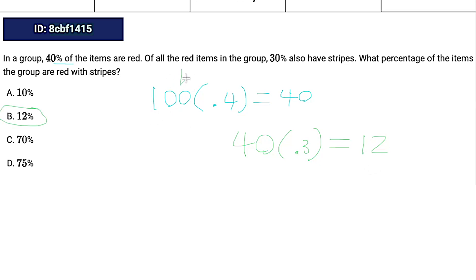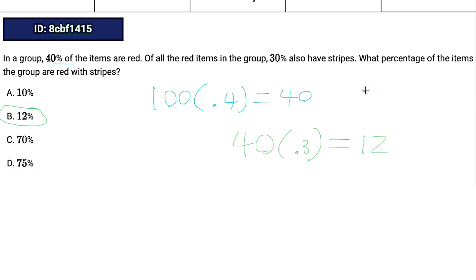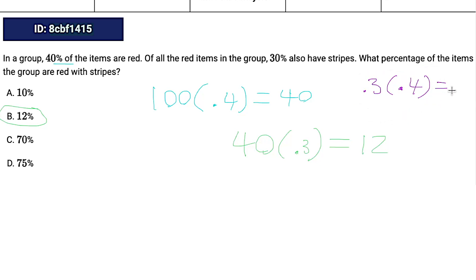I recommend just throwing in a real number — it's easier to conceptualize what's happening. But in case you want to know what it looks like without a number, you can actually just multiply the percentages together. What's 30% of 40%? You multiply 0.3 times 0.4, and you end up with 0.12, or 12%. So that's another way to get to your answer.